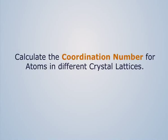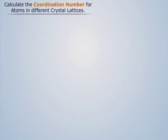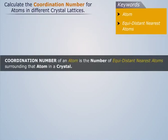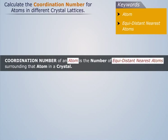Calculate the coordination number for atoms in different crystal lattices. Coordination number of an atom is defined as the number of equidistant nearest atoms surrounding that atom in a crystal.